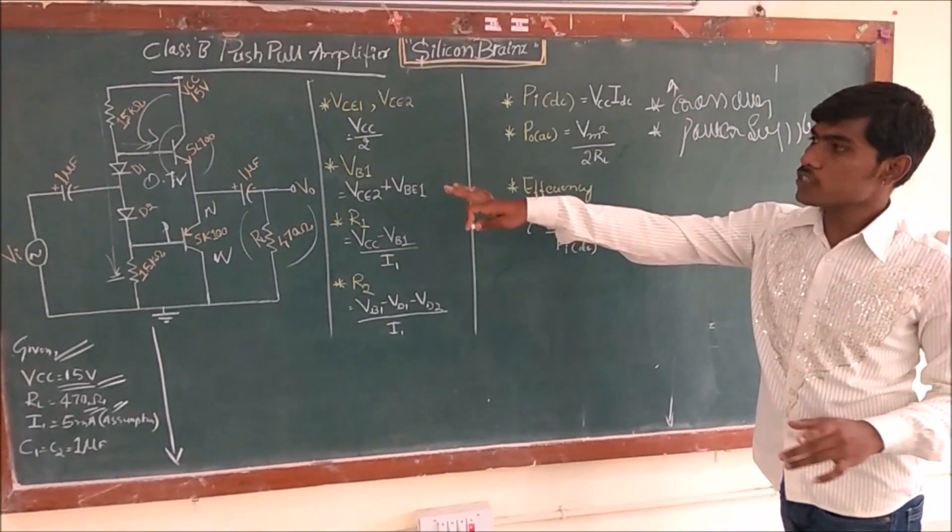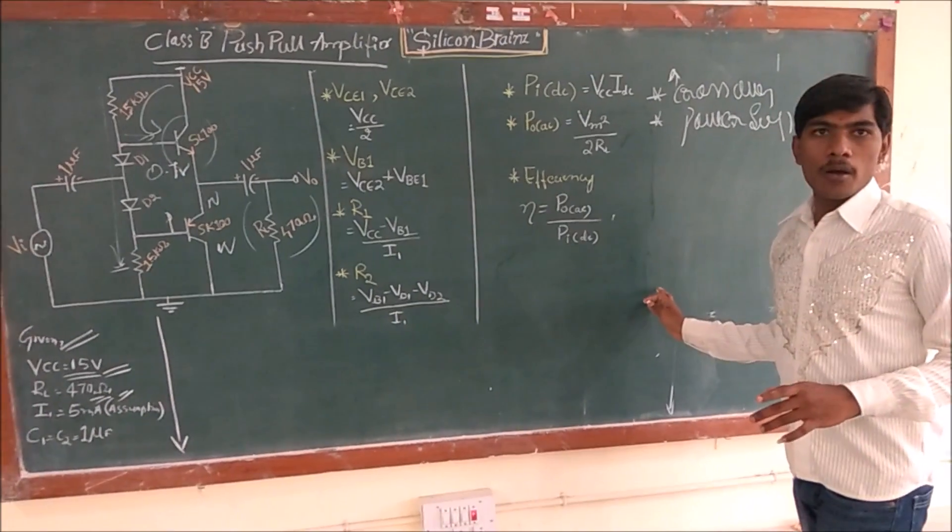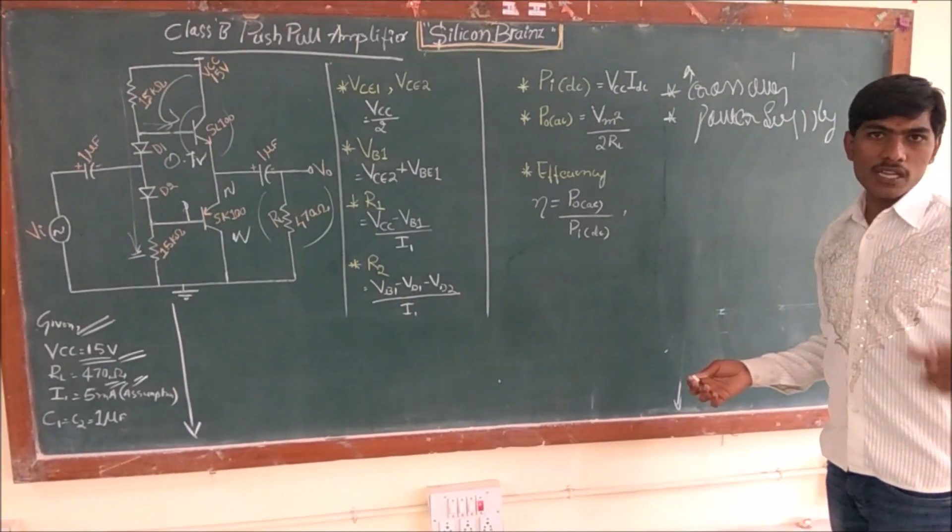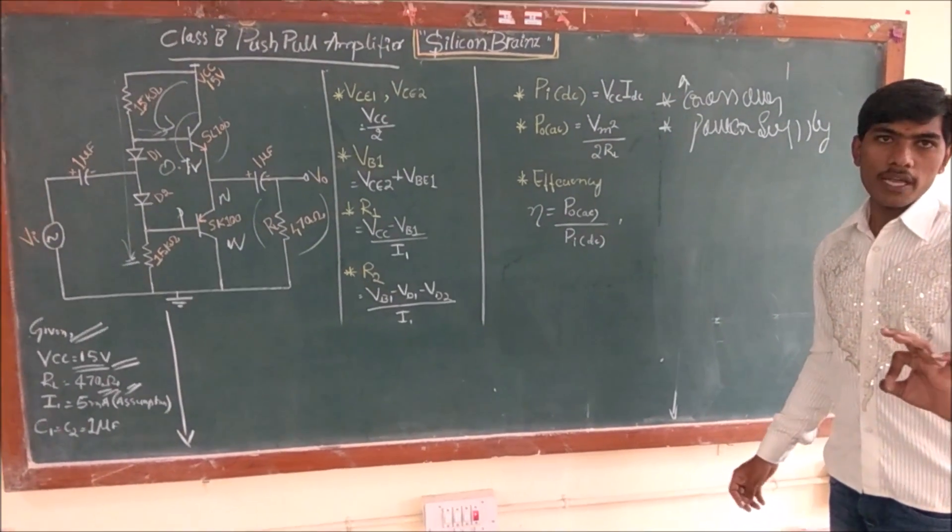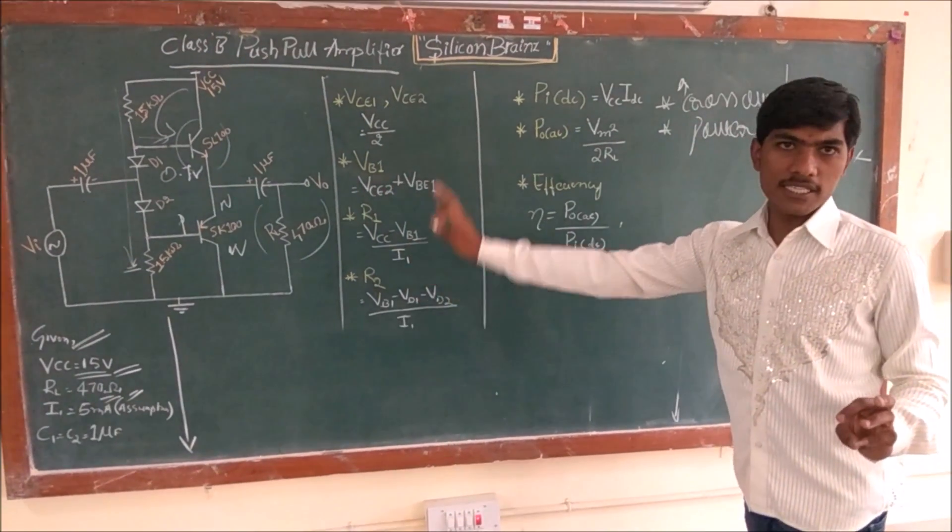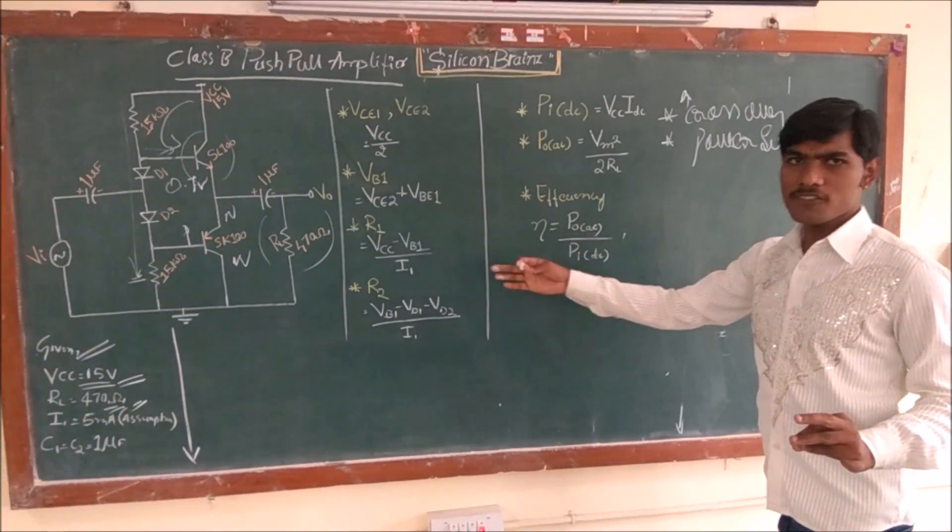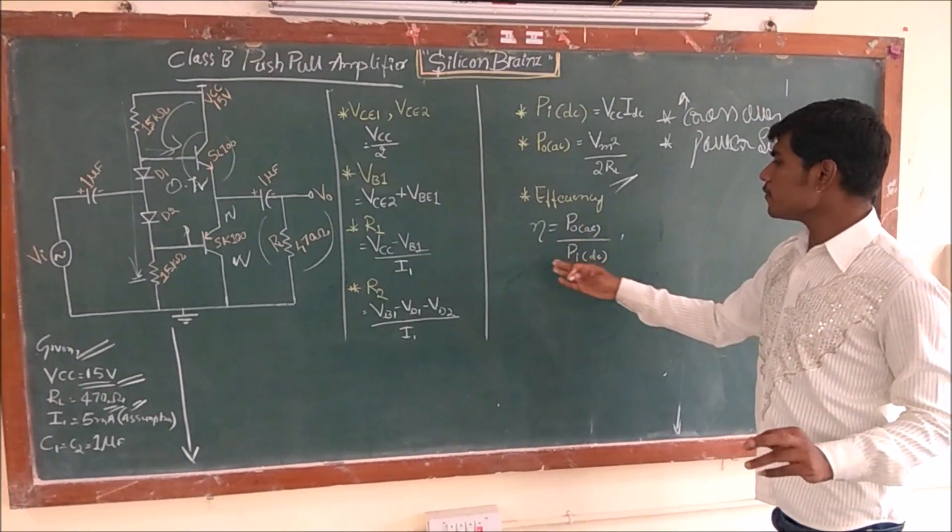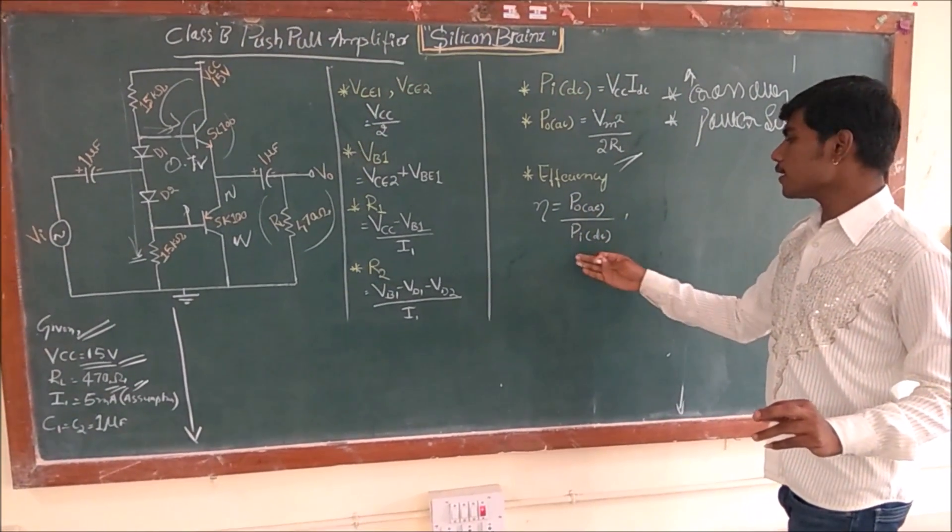The efficiency of this circuit is more compared to the standard push-pull. How? It's already in the cutoff region, so it gives very slight current. That slight current multiplied with the VCC gives very less DC power.